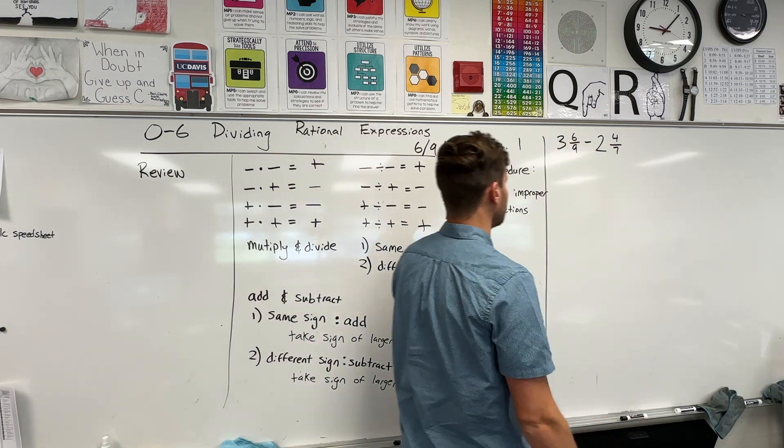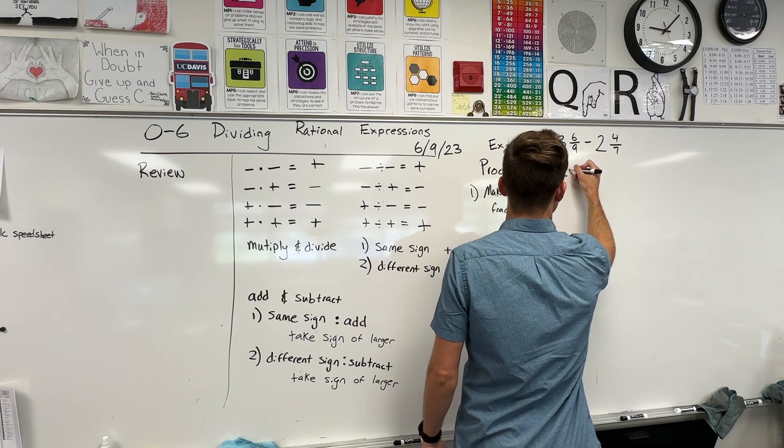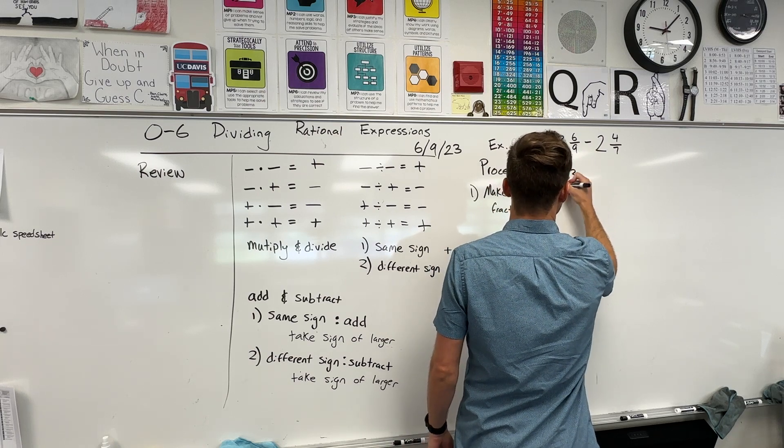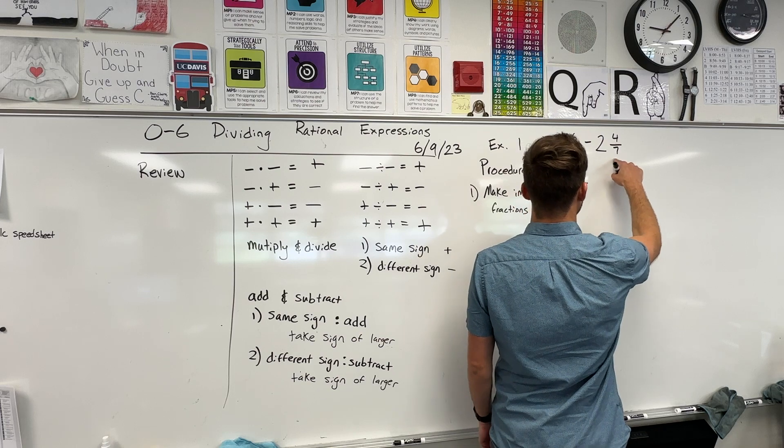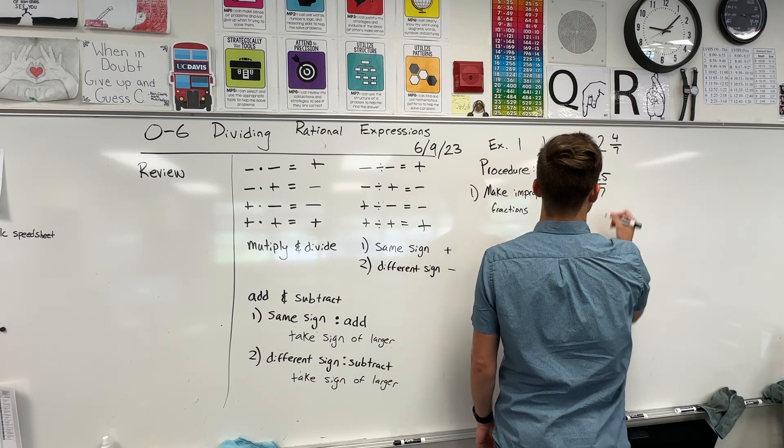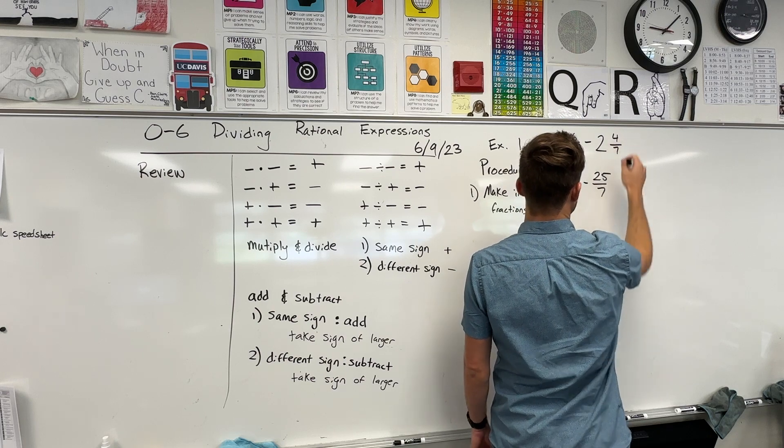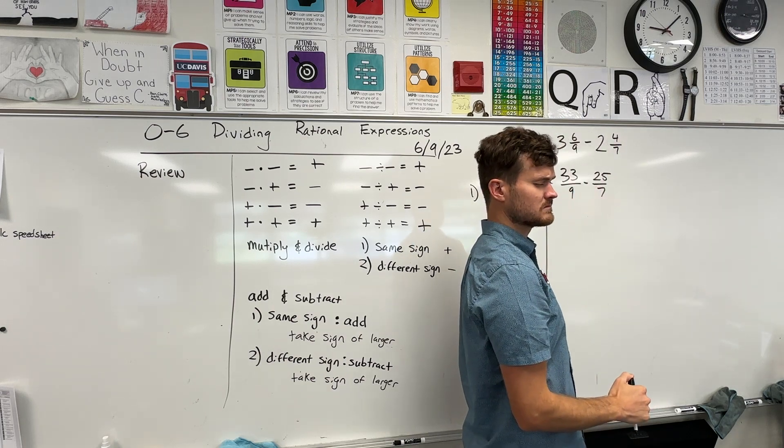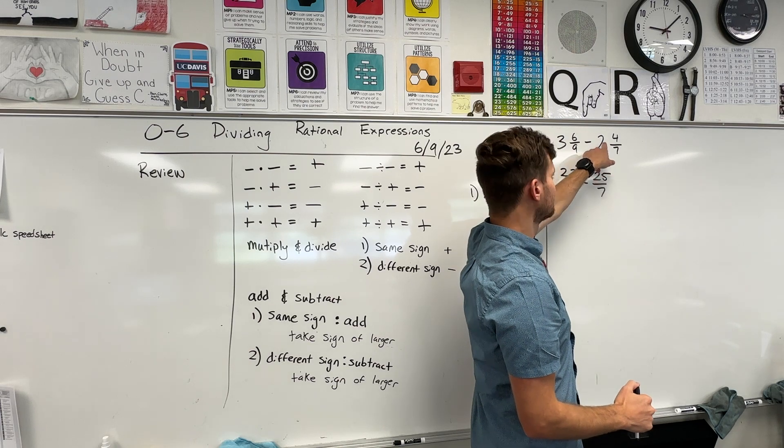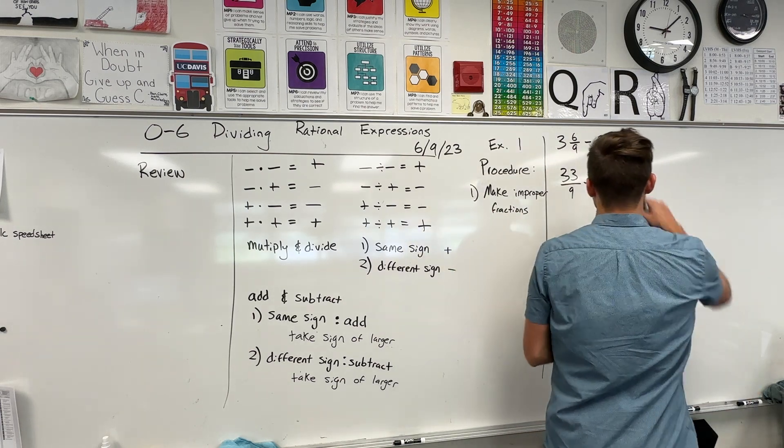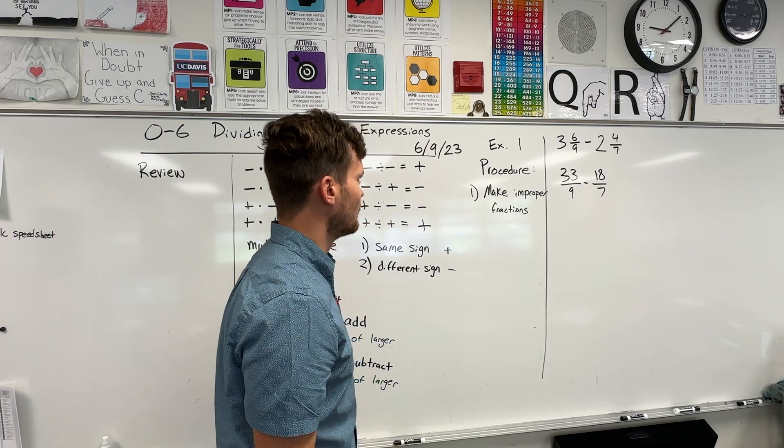What if I have something that's different signs? If they're different signs, that would be something like negative two plus three or negative two. It'd have to be a different sign. I could say minus a negative one or I could have one minus four. All of these have different signs. If there's different signs, then you subtract. And there is a second condition that some people tend to forget: always take the sign of the larger number. If the larger number is three, that sign up front was a positive, so you take that sign.